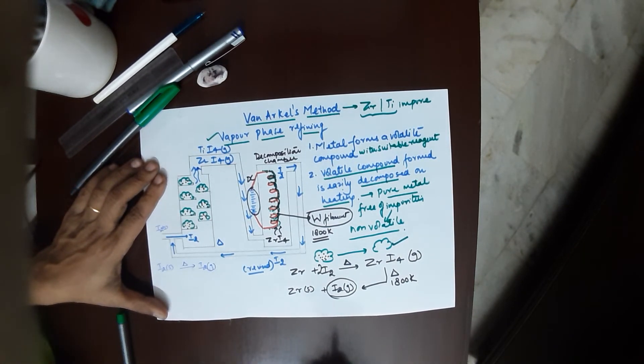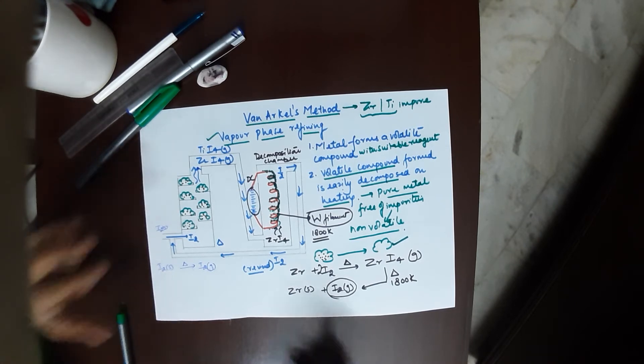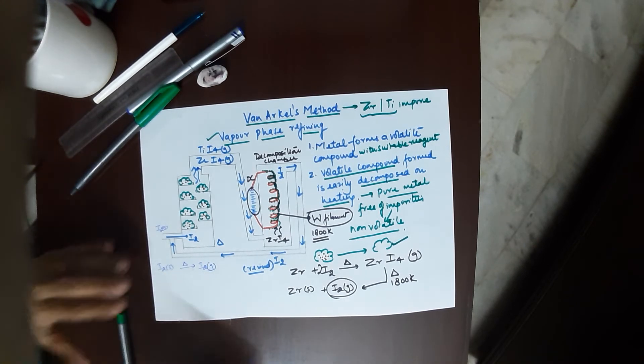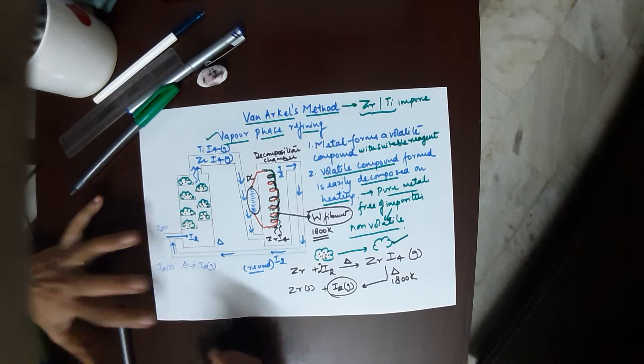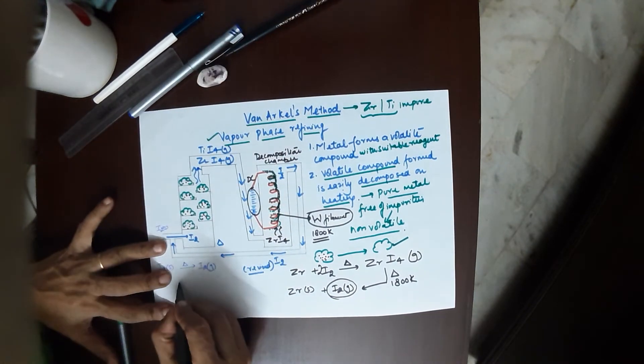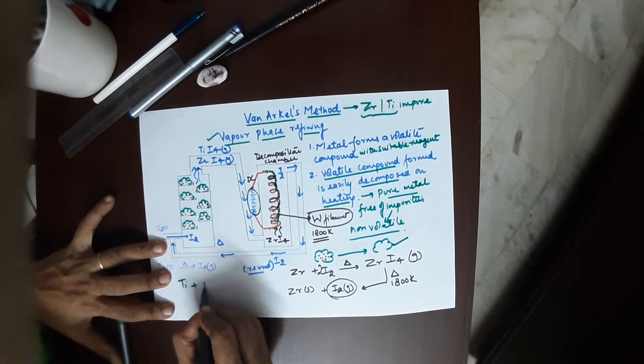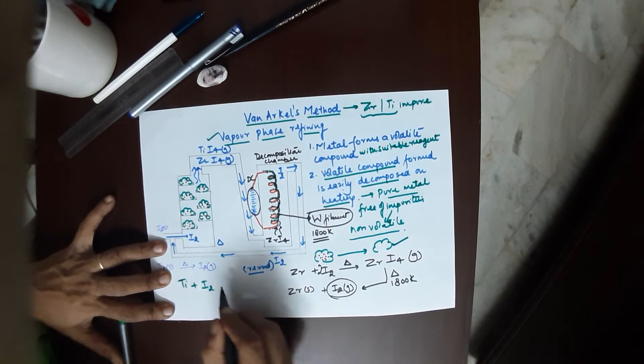With this, I end the topic of Van Arkel's method. In case the question is for titanium, I remind again, for titanium nothing to worry. You would only write titanium reacts with iodine, which is the reagent you are using.